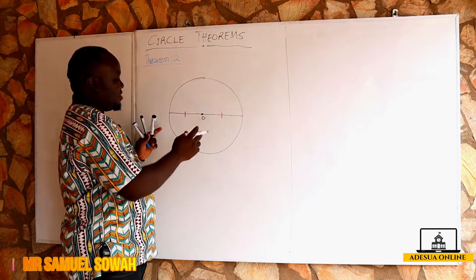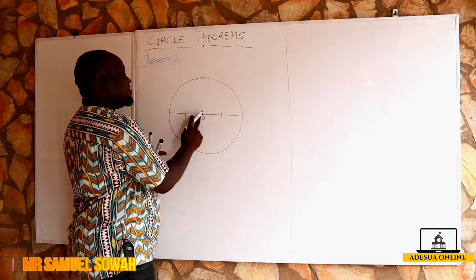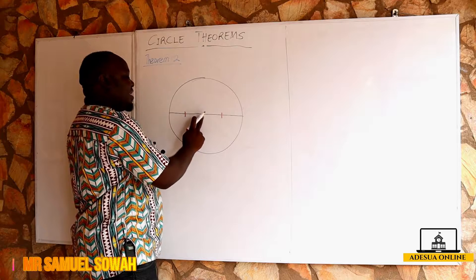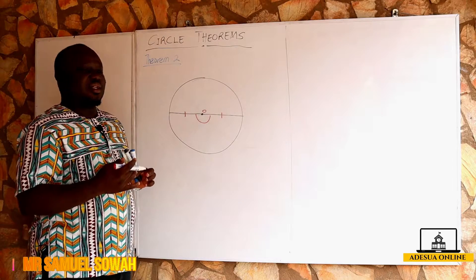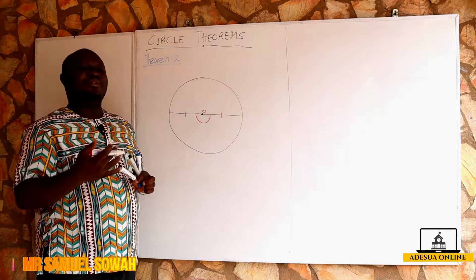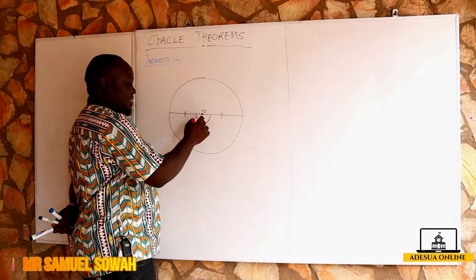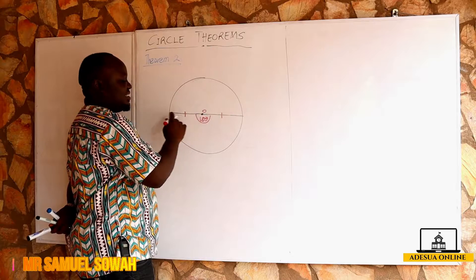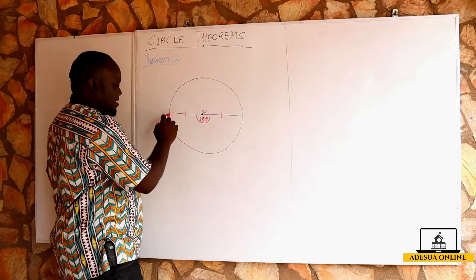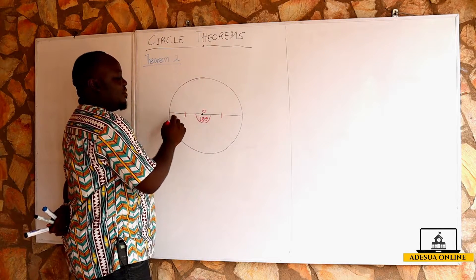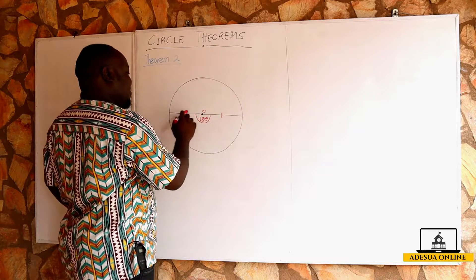This radius and this radius, which together form a chord, are sustaining an angle to the center of the circle. The diameter divides the circle into two equal parts, so the angle at the center is 180 degrees. This chord is also suspending another angle to the circumference.